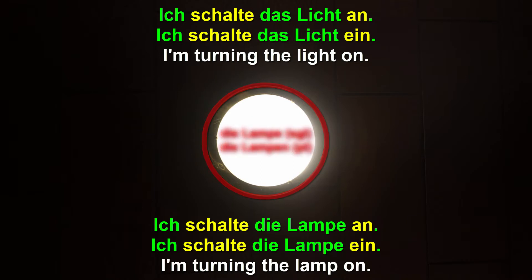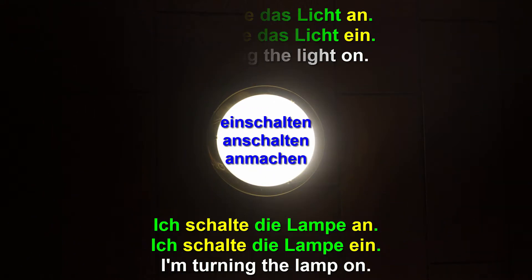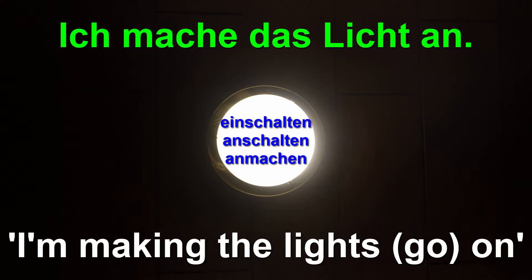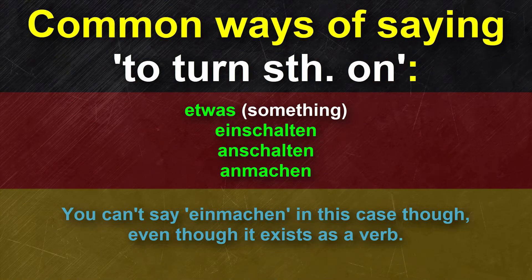Schalte an and schalte ein refer to two different verbs which at the end of the day actually mean the same: einschalten, anschalten — to turn or switch something on. Instead of using einschalten or anschalten, you could also use a conjugated form of anmachen, which in a literal sense means to make something on. Ich mache das Licht an. You can very well say anmachen instead of anschalten, but you can't say einmachen in this context.